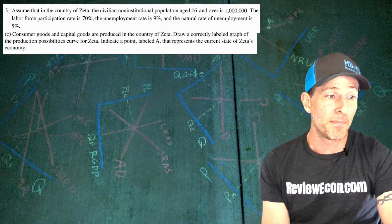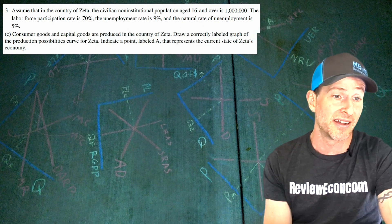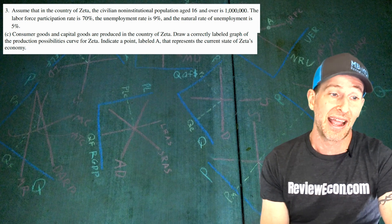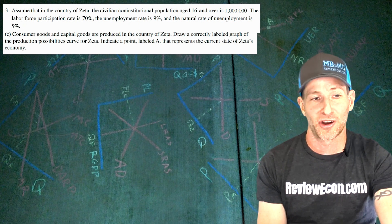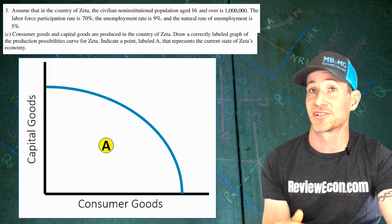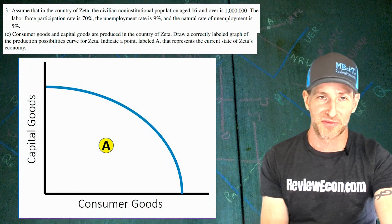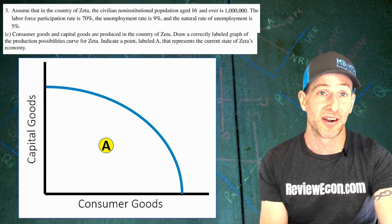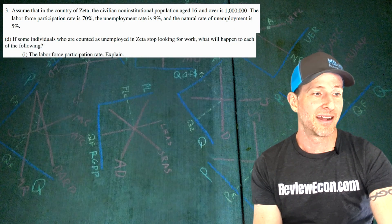Part C: consumer and capital goods are produced in Zeta. We draw a correctly labeled production possibilities curve and indicate a point labeled A representing the current state of Zeta's economy. Since there's a recessionary gap, we put point A within the production possibilities curve, showing an inefficient use of resources. With high levels of unemployment, Zeta is underproducing both consumer goods and capital goods.